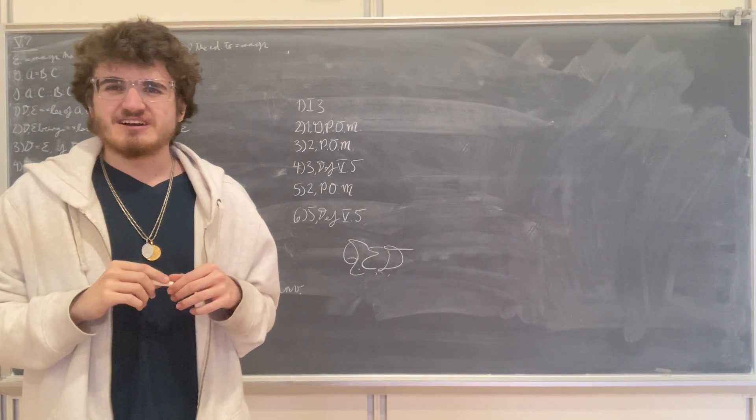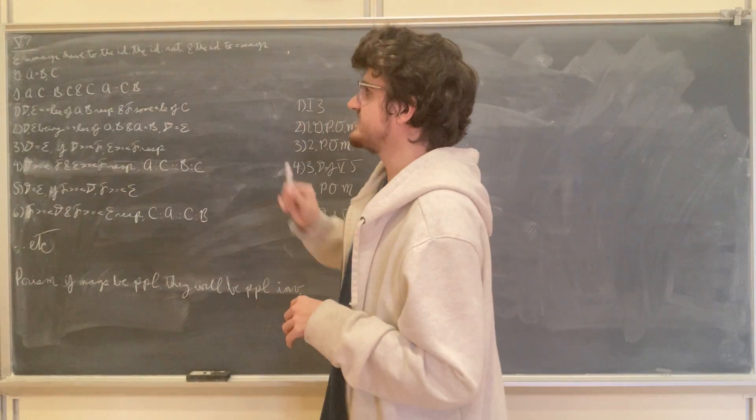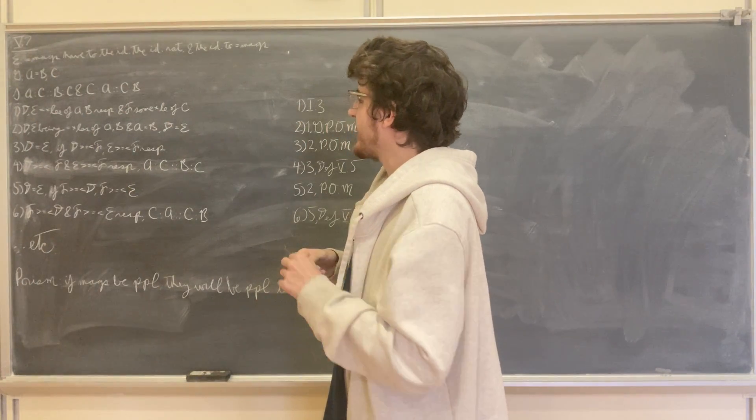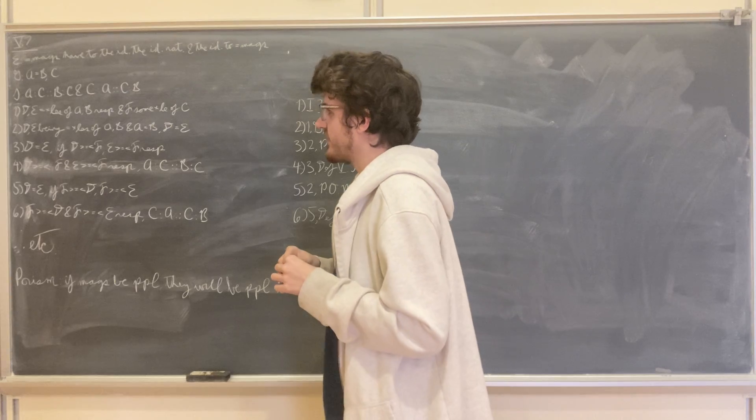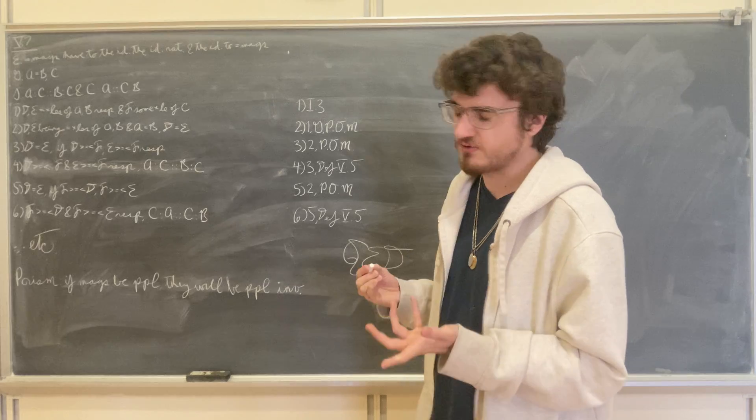Hello, this will be a demonstration of Proposition 7 from Book 5 of Euclid's Elements, which says that equal magnitudes have to the same magnitude the same ratio, and also the same magnitude has to equal magnitudes the same ratio.